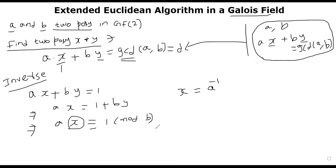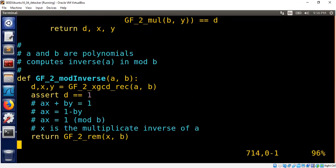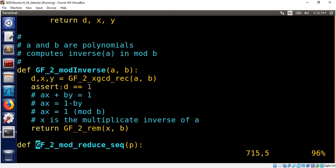I'll show you my Python implementation very quickly. So we'll do Galois field 2 mod inverse. Whatever I have shown on the whiteboard is just codified here. We call the extended Euclidean algorithm in a Galois field to find out X and Y.